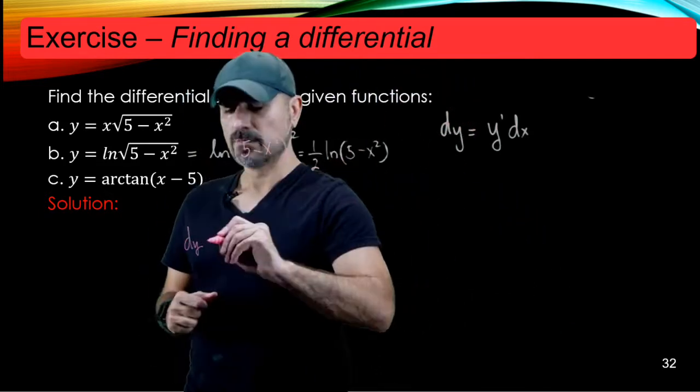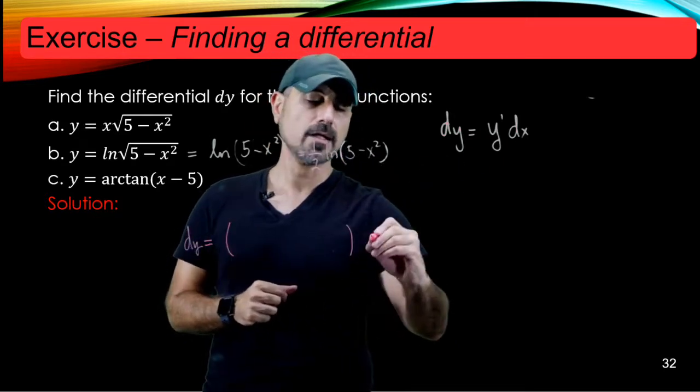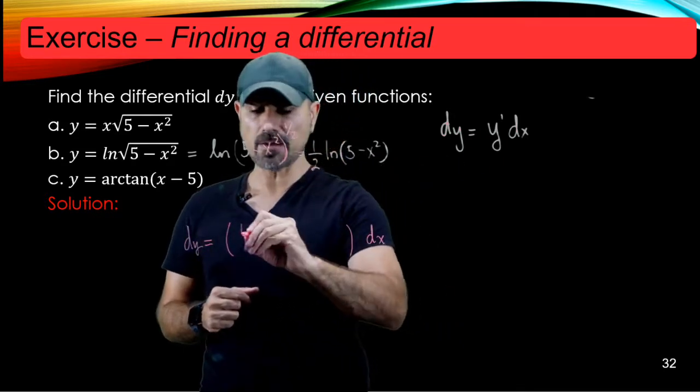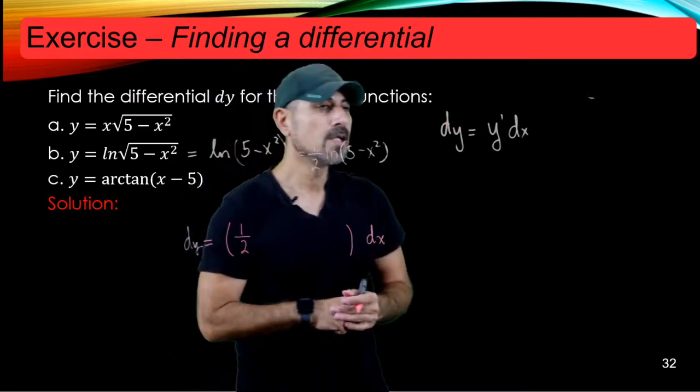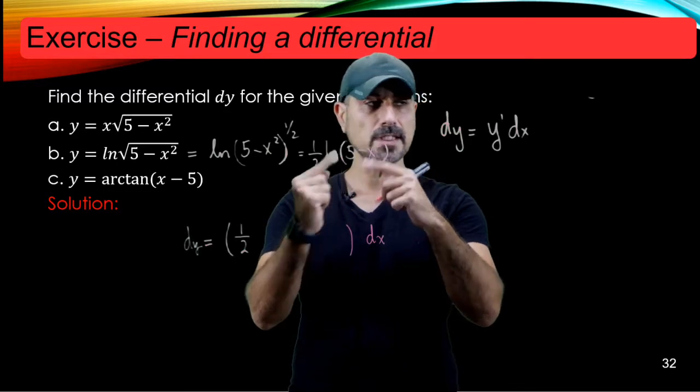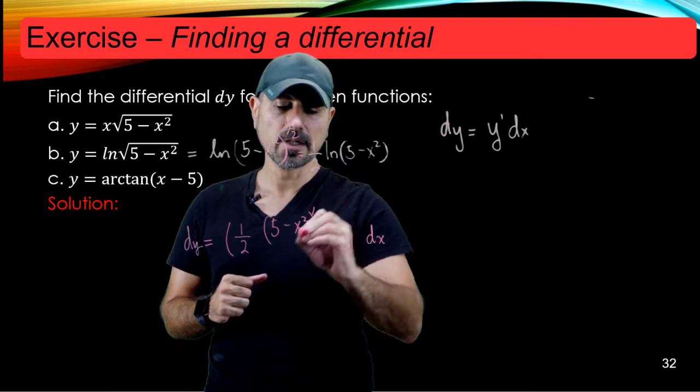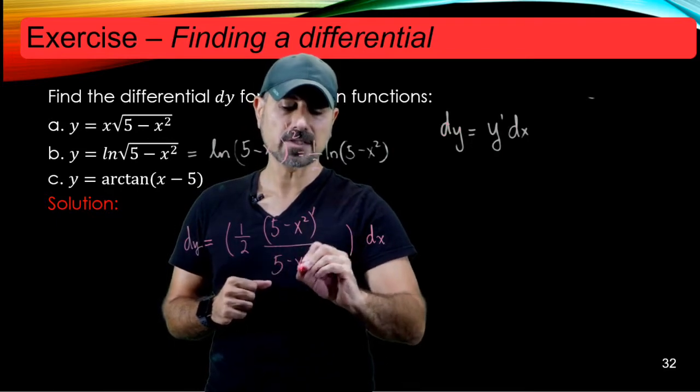So here we go. So dy is equal to the derivative of this function times dx. Okay. So I have 1 half as a multiple, so I keep it as this. And the derivative of ln goes like this. So it's the derivative of inside divided by inside. So in other words, it's 5 minus x squared prime divided by 5 minus x squared.